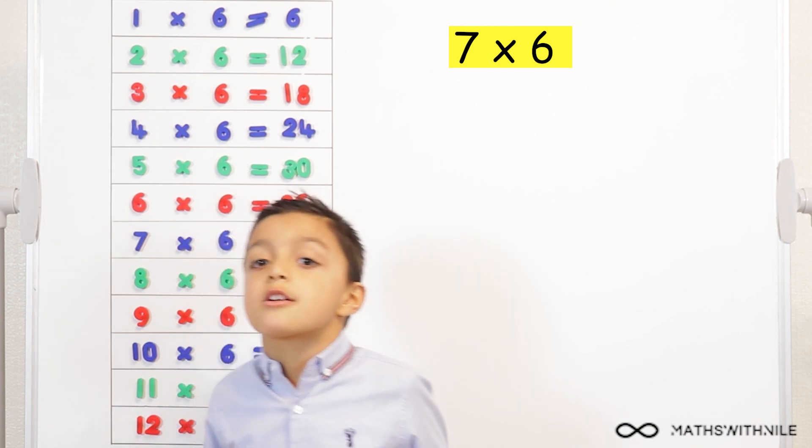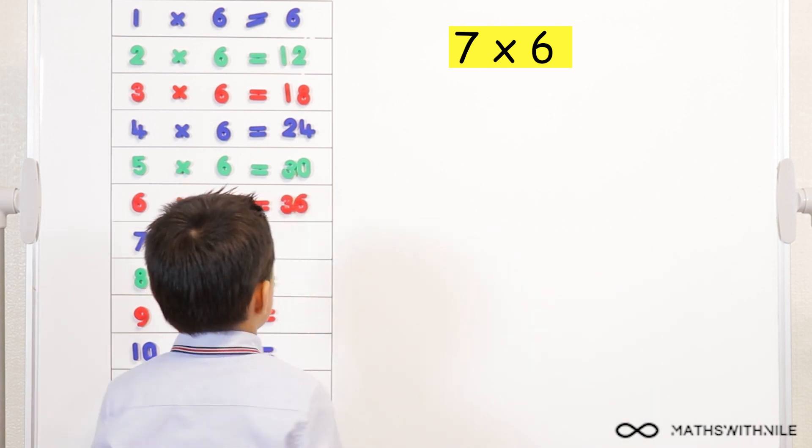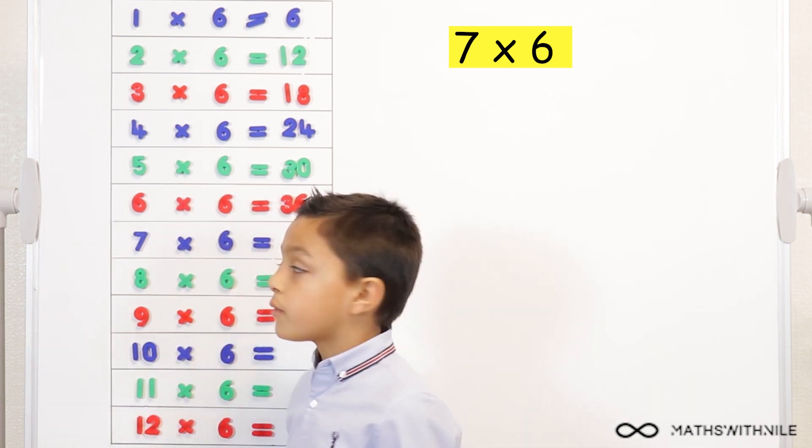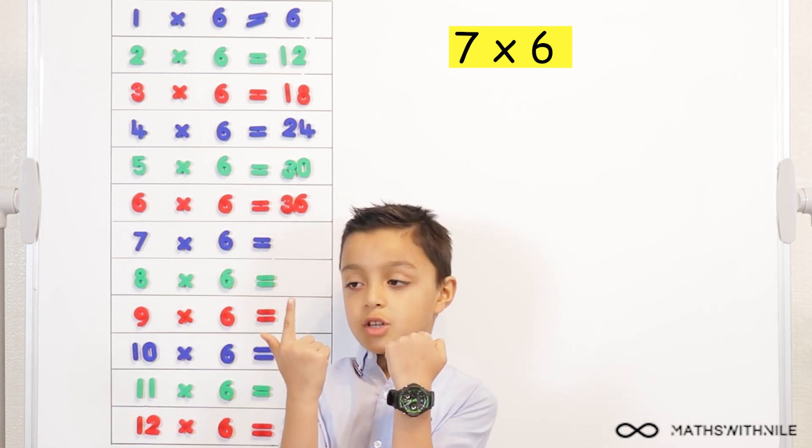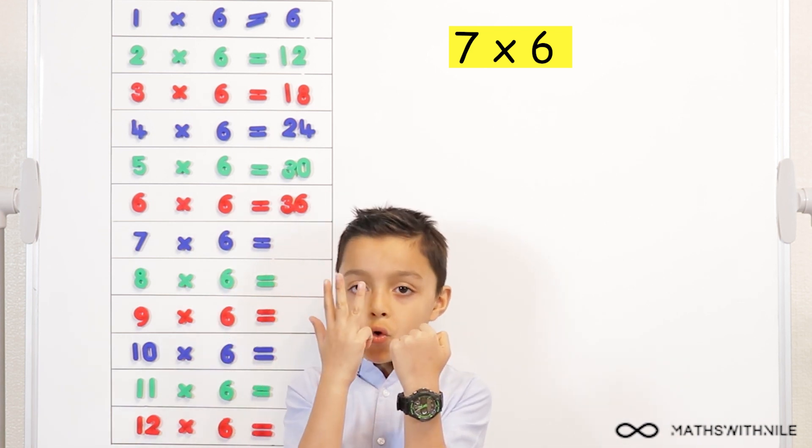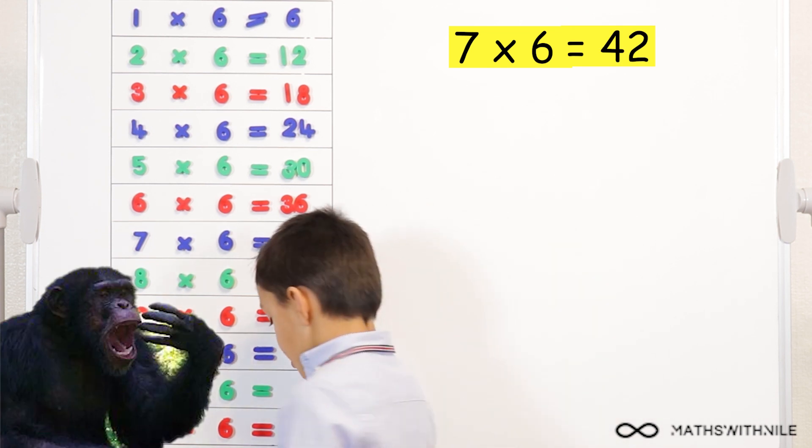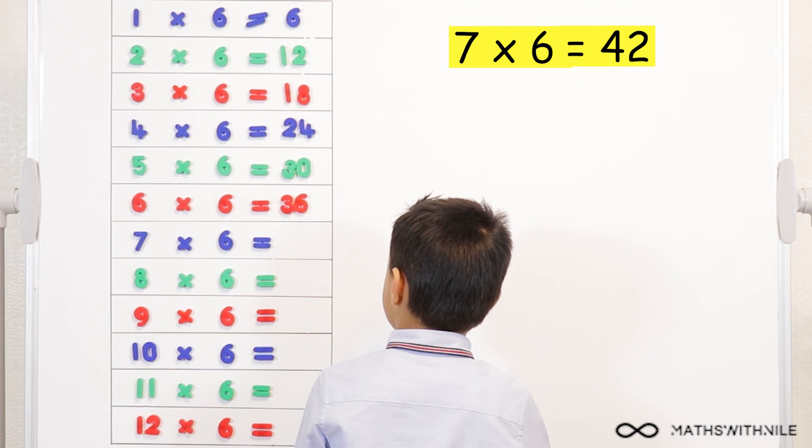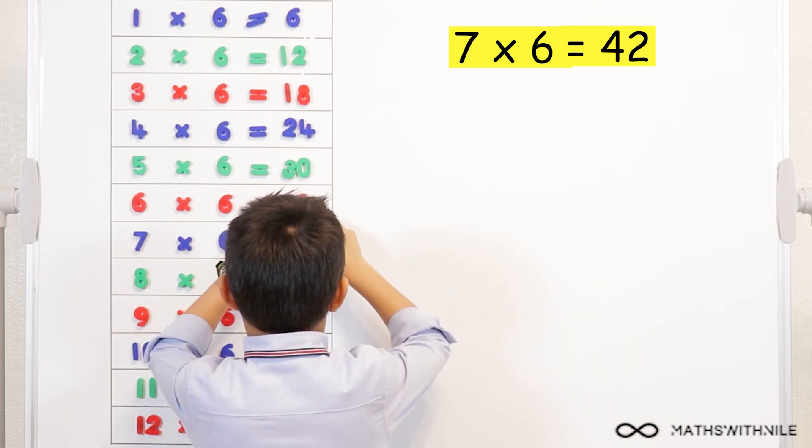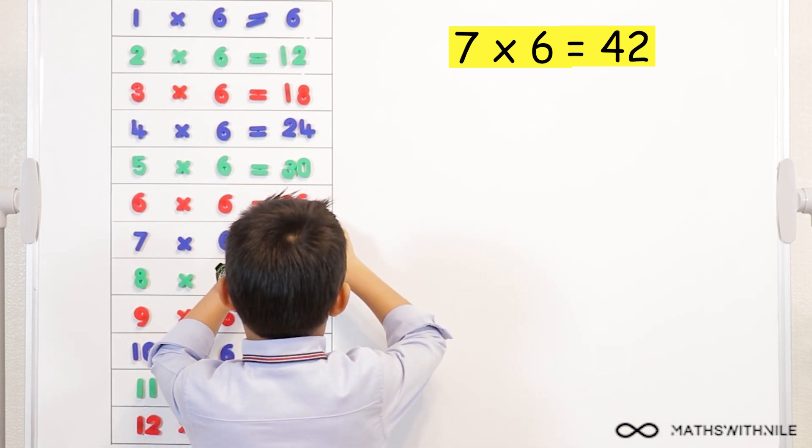Seven times six. So, count on from thirty-six. Thirty-six, thirty-seven, thirty-eight, thirty-nine, forty, forty-one, forty-two. Seven equals forty-two. That was a big yawn. Are you a bit tired? No.